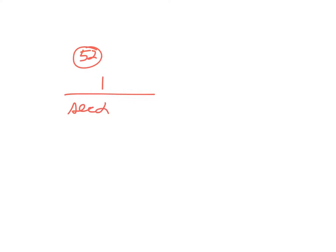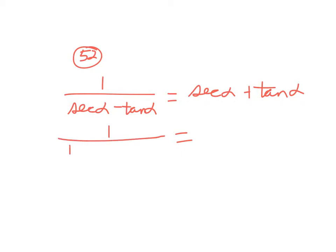This last one is number 52. The problem says: 1 over secant alpha minus tangent alpha is equal to secant alpha plus tangent alpha. Again, which side would you prefer to start on? It would be 1 over 1 over cosine alpha minus sine alpha over cosine alpha.